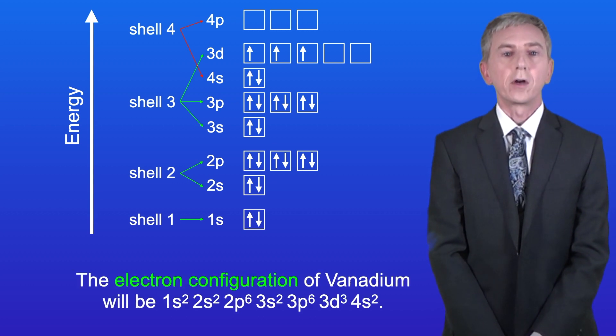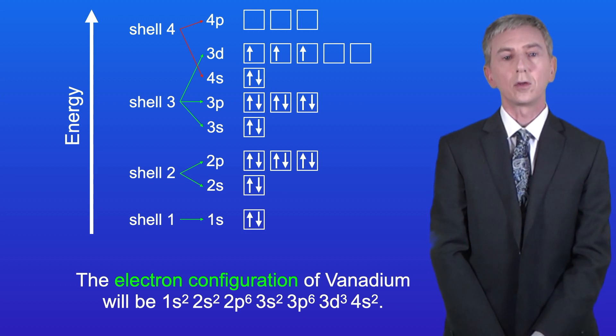The electron configuration of vanadium will be 1s2, 2s2, 2p6, 3s2, 3p6, 3d3, 4s2.